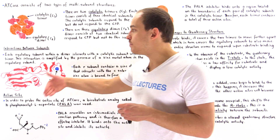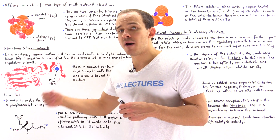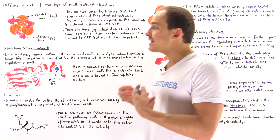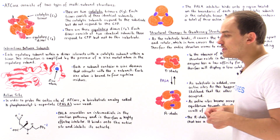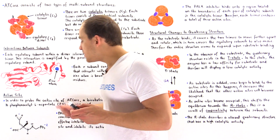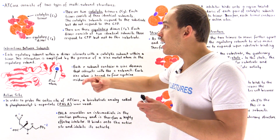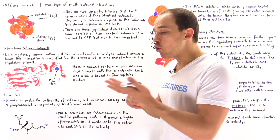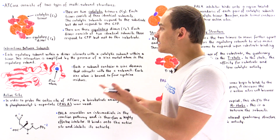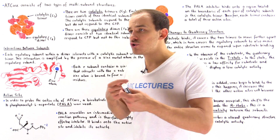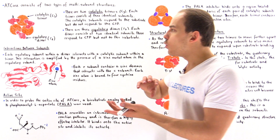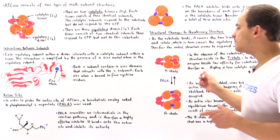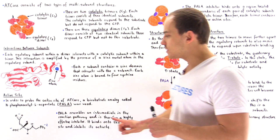PALA resembles an intermediate in the reaction pathway and is therefore a highly potent, highly effective inhibitor. It binds onto the active site because it resembles the bisubstrate analog formed as an intermediate in this reaction. Once it binds onto the active site, it binds irreversibly, does not let go, and that inhibits the activity of this enzyme. Binding PALA into the active site not only tells us where the active site is found, but can also be used to study what structural changes take place within the enzyme.